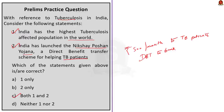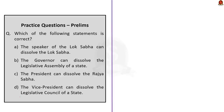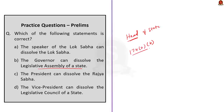The second question has multiple statements and asks to find the correct one. The answer is option B — the governor can dissolve the legislative assembly of a state. This is because the governor, as head of state appointed by the central government, ensures the state government works within constitutional rules. Under Article 174(2)(b) of the constitution, the governor has the power to dissolve the assembly on the aid and advice of the cabinet.